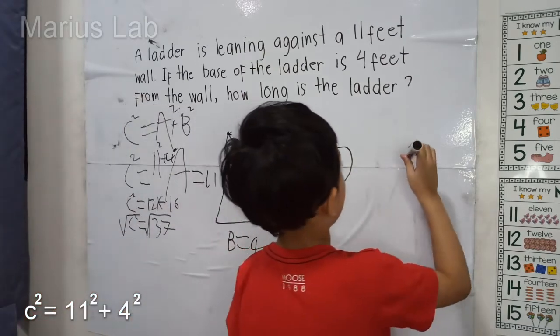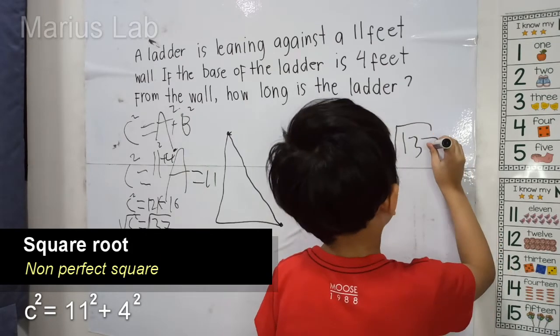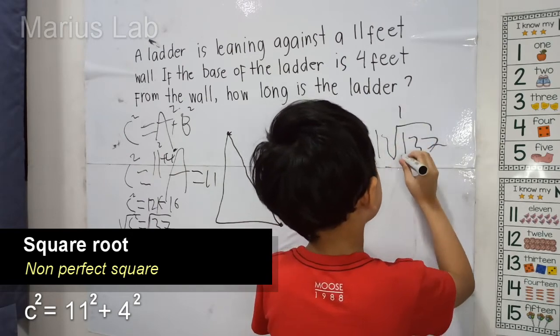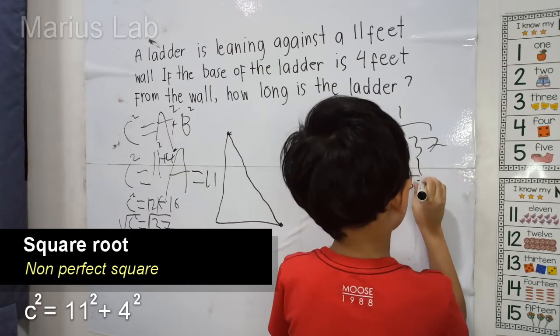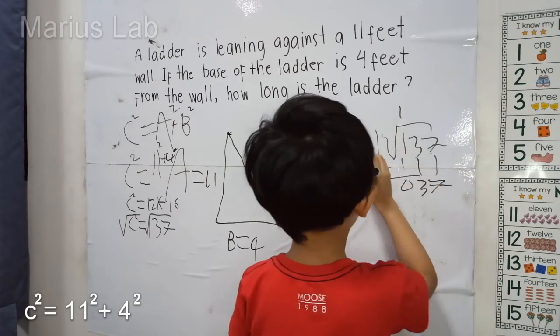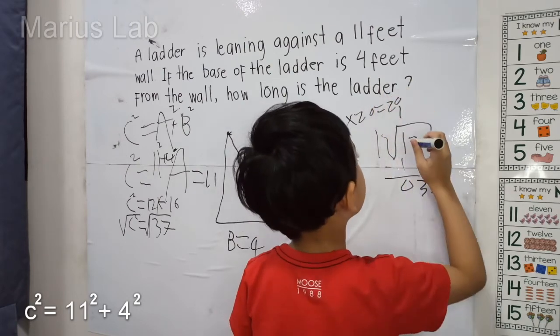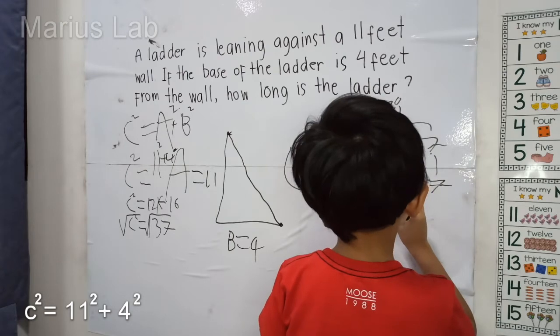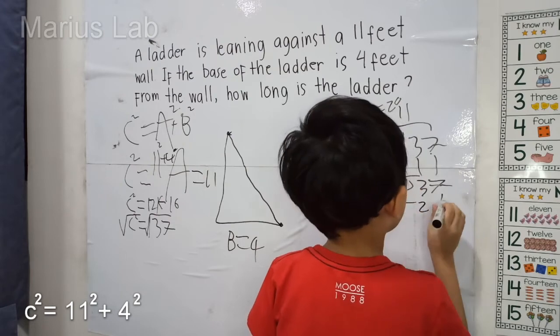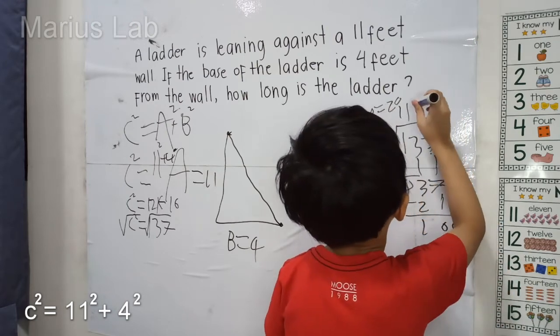And then the square root of 137. And then 1 here, 1, 1, 1 minus 1 is 0, 3, 3, 3 and 7. And then 1 times 20 equals 20, and then 1 and then minus 21 equals 16. I do 0, I do 0, I point here.